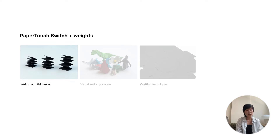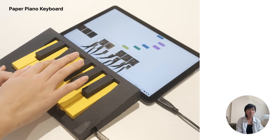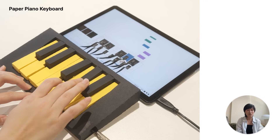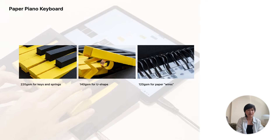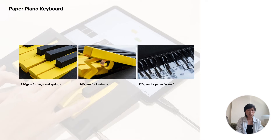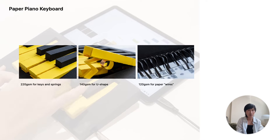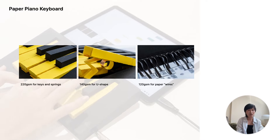Paper comes in different weights. Different thicknesses of sheets influence what we can build and the tactile experience it offers. By making use of such qualities, we designed a paper piano keyboard to control a digital music instrument webpage. We used 220 GSM paper to make the keys and their springs for a satisfying press, while the U-shape under the key is 140 GSM to ensure they properly touch the switch beneath. The connections, or what we call paper wires, used 120 GSM paper for their ability to bend, and the outer shell was made from 400 GSM paper, giving the keyboard a solid structure.